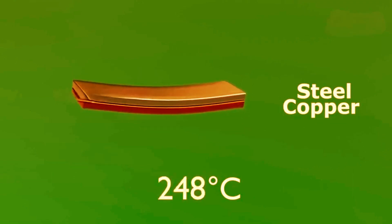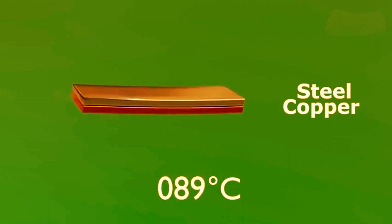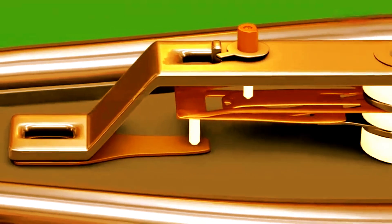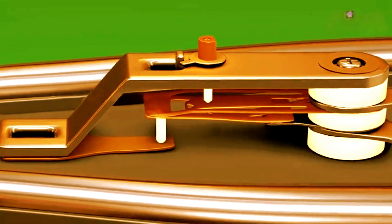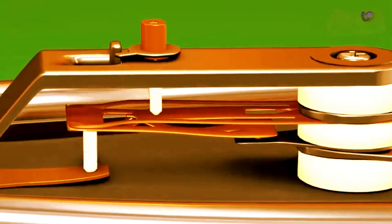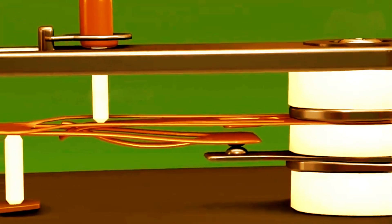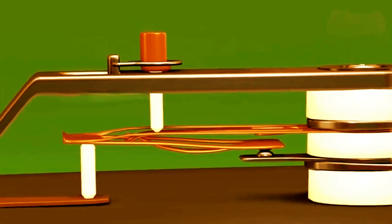So when the iron gets too hot, the bimetallic strip bends. Let's see how it works. You can see the bending and now I will demonstrate how it is used here. When the iron gets too hot, the bimetallic strip bends and pushes the contact spring which stops the electricity from flowing. When the iron cools down, the strip goes back to its original shape allowing the electricity to flow again.